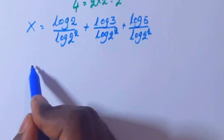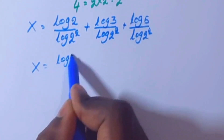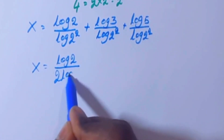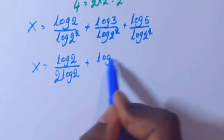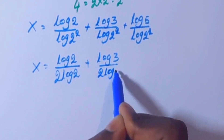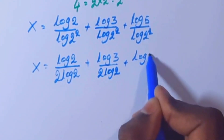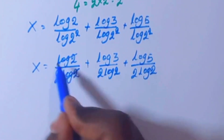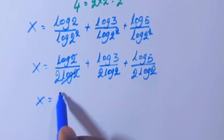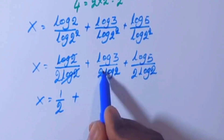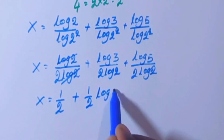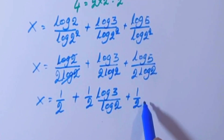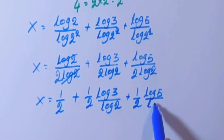So x equals log 2 by log(2²) plus log 3 by log(2²) plus log 5 by log(2²). Using the power rule, log(2²) equals 2 log 2, so log 2 cancels in the first term, giving x equals 1/2 plus (1/2)(log 3 by log 2) plus (1/2)(log 5 by log 2).